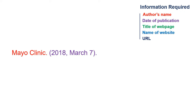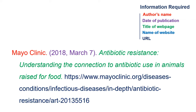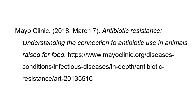Again, the title is in italics with the first letter of the title and subtitle and any proper nouns capitalized. End with a period. This time, the name of the website is not necessary, as it is already included in the author field. Include the web page URL. This is your APA website citation for a web page with no author.